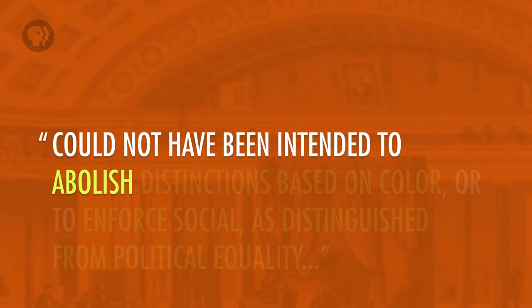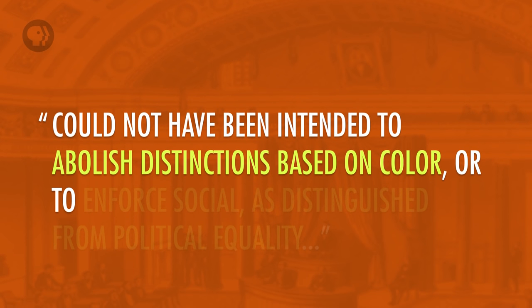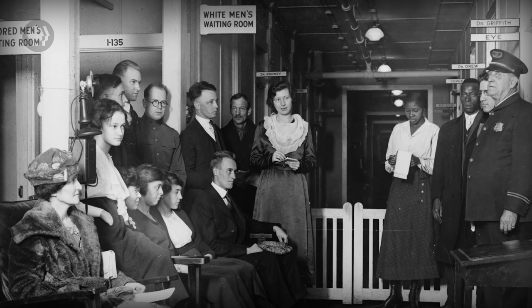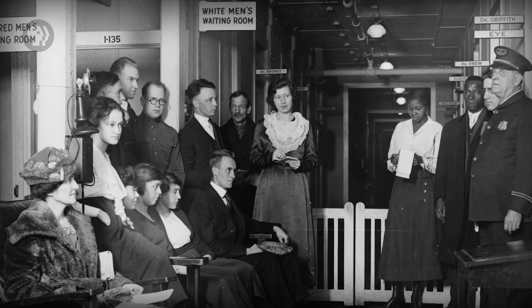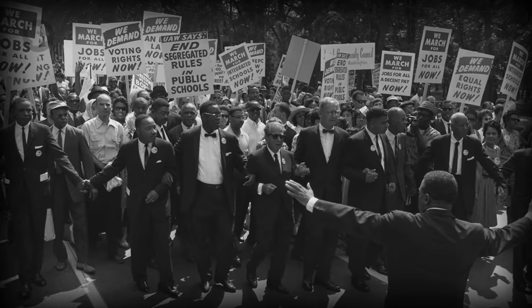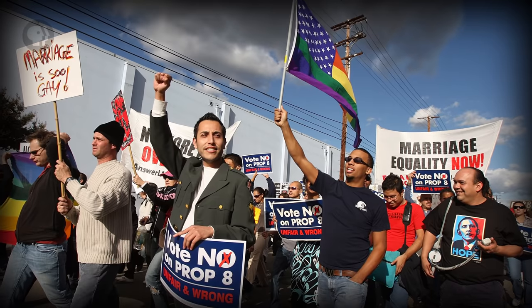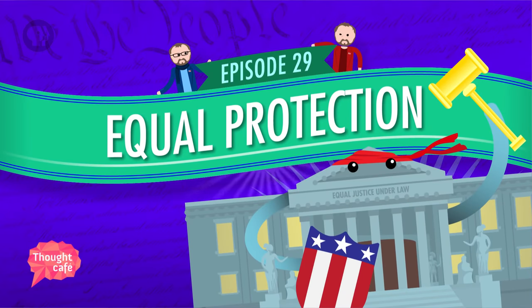In the civil rights cases, the court ruled that the law could not have been intended to abolish distinctions based on color or to enforce social as distinguished from political equality. They confirmed that as long as the state provided equal accommodations for people of different races, segregation was fine. This is the infamous separate-but-equal doctrine formulated in Plessy v. Ferguson. The distinction between social and political equality is important and provides a principle for looking at discrimination that courts still use — though it's pretty complicated, involving levels of scrutiny and protected classes.